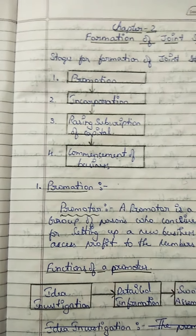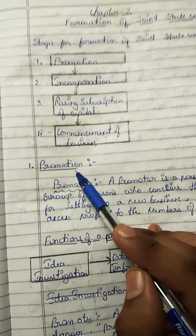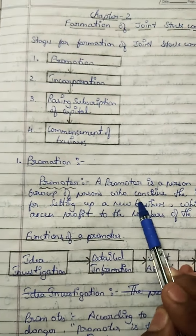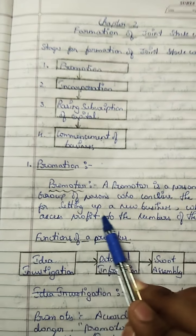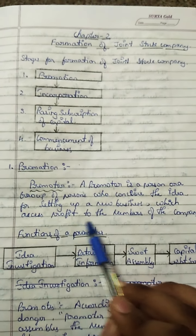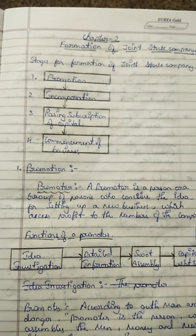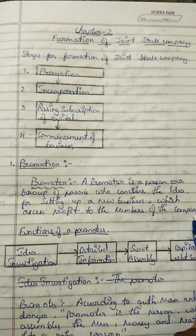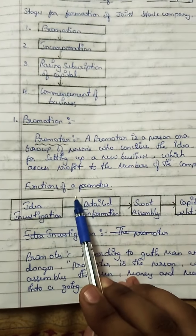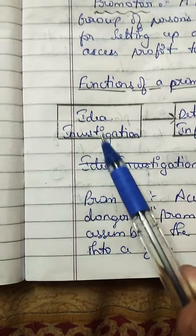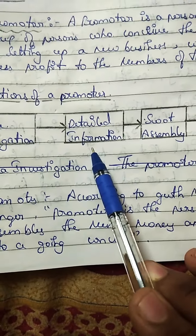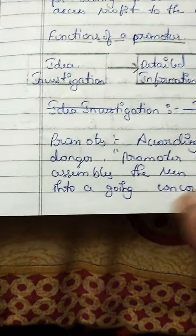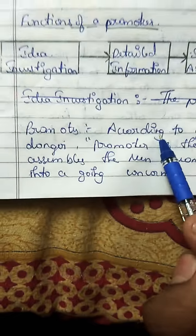First, let's begin with promotion. A promoter is a person or a group of persons who conceive the idea for setting up a new business which assesses profit to the members of the company. Promoters are persons or a group of people who give the idea for a profitable business. The functions of a promoter include: idea investigation, detailed information, SWOT, assembly, and capital estimation.